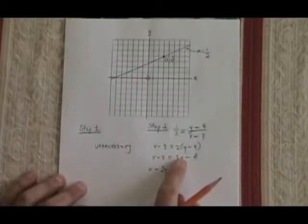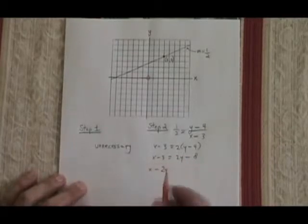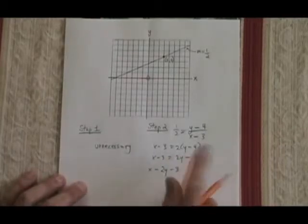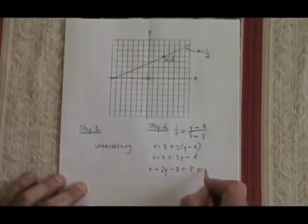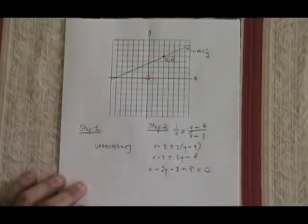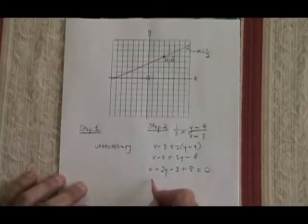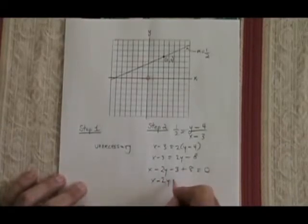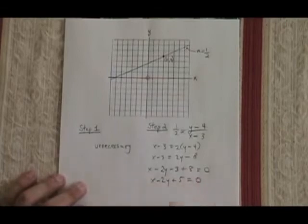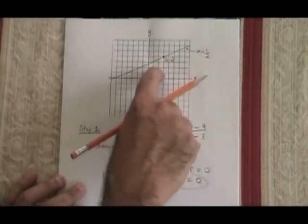And now I move everything to the left. x first, then minus 2y. The 2y changed signs because it changed sides. Then I put the minus 3, and then I put plus 8. The 8 also changed signs. Don't forget the equals 0. I have to combine my two constant terms. So my final answer is x minus 2y plus 5 equals 0. This is the equation for this line.